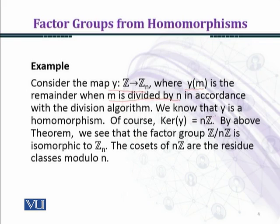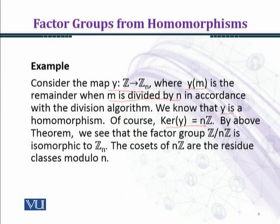We know that Y is a homomorphism, as we have already seen this. The kernel of Y equals nZ. The kernel contains elements of G (here G equals Z) — those elements of Z that map to the identity element. So we can see that Z_N is isomorphic to Z/nZ.